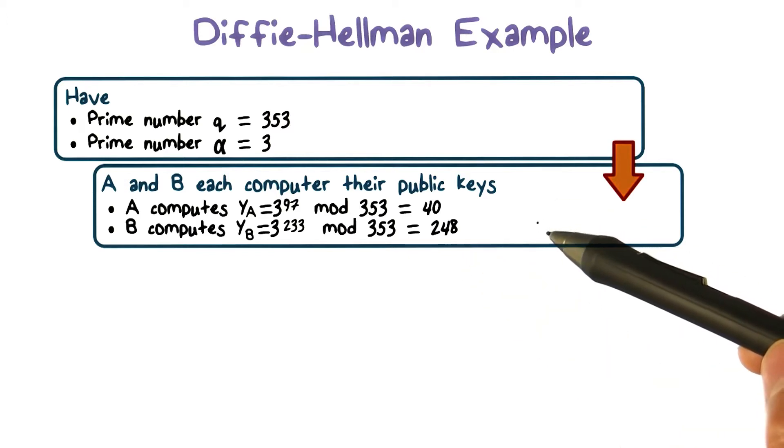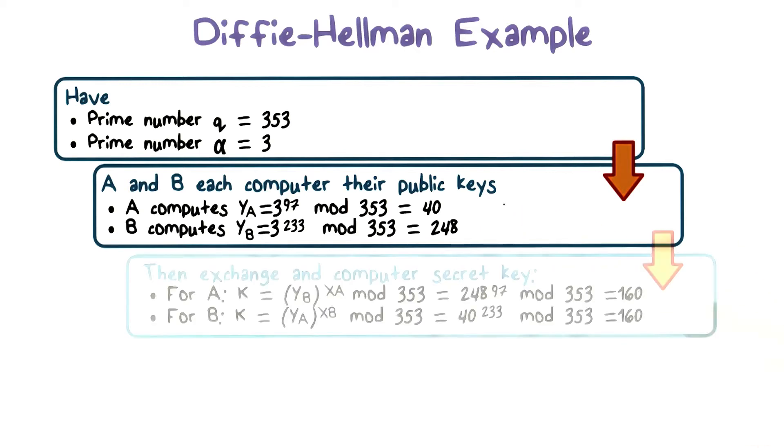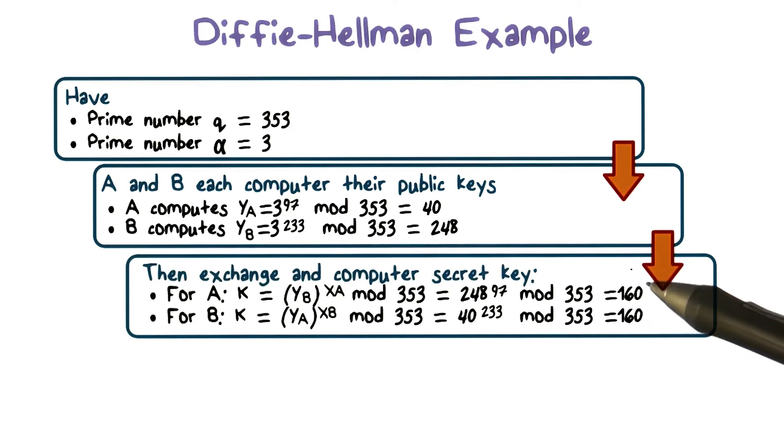And they exchange these values, that is, user A sends 40 to user B, and user B sends 248 to user A.